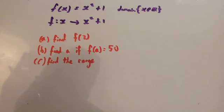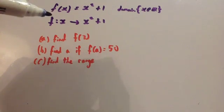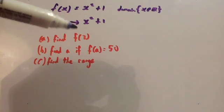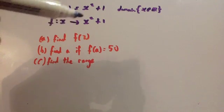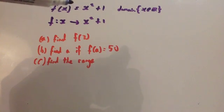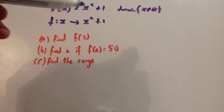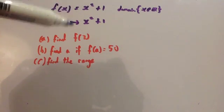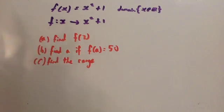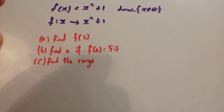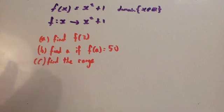You should have watched the video already on functions and looking at the different types of functions. This one is going to be a many-to-one function, because the different values you put in will give you the same answer. If you think of the graph — it's quadratic, it's going to come down and back up again. It will have the same heights with different input numbers or different values in the domain. So it's going to be a many-to-one, because many elements of the domain will go to the same element of the range.